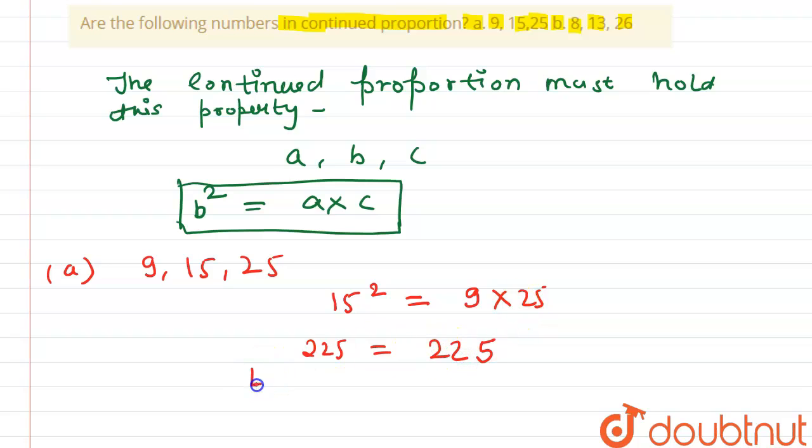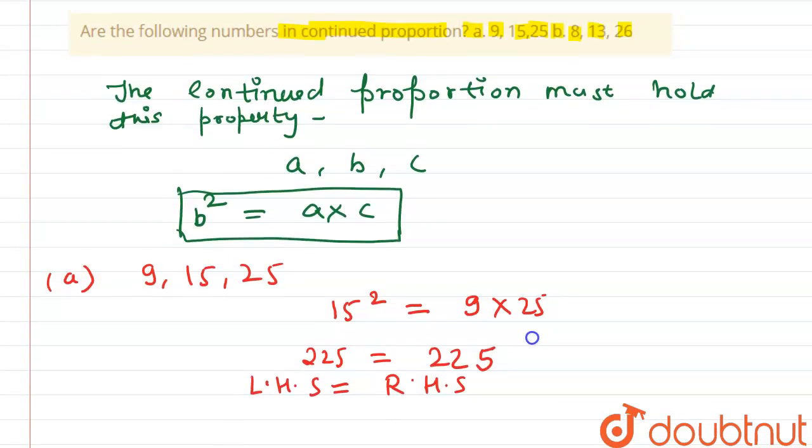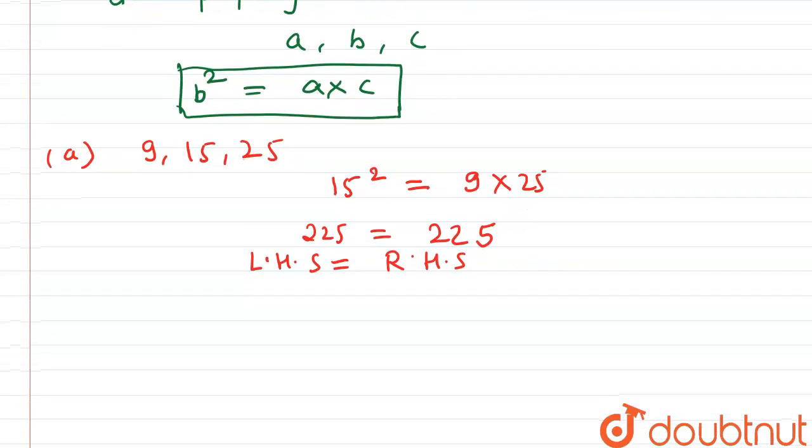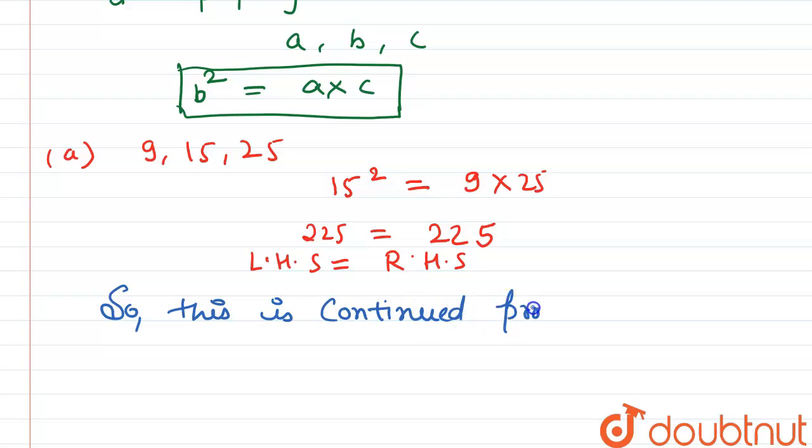Here we see that LHS equals RHS. So we say that this is a continued proportion. This is a continued proportion because it holds the property of continued proportion.